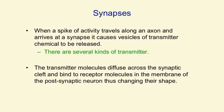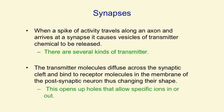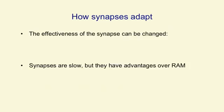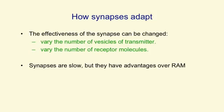The transmitter molecules diffuse across the synaptic cleft and bind to receptor molecules in the membrane of the postsynaptic neuron. By binding to these big molecules in the membrane, they change their shape, and that creates holes in the membrane. These holes allow specific ions to flow in or out of the postsynaptic neuron, and that changes their state of depolarisation. Synapses adapt by varying the number of vesicles that get released when a spike arrives, or by varying the number of receptor molecules that are sensitive to the released transmitter molecules.